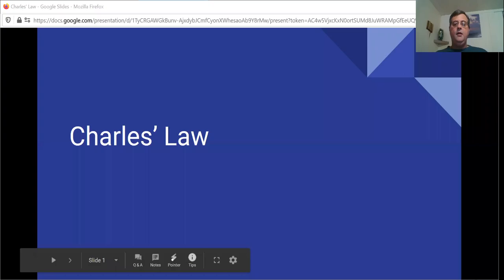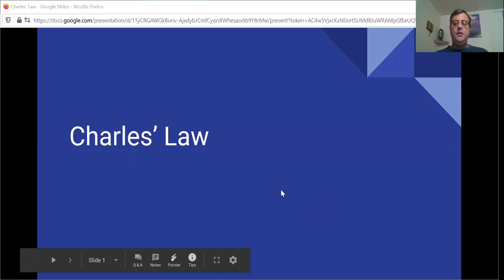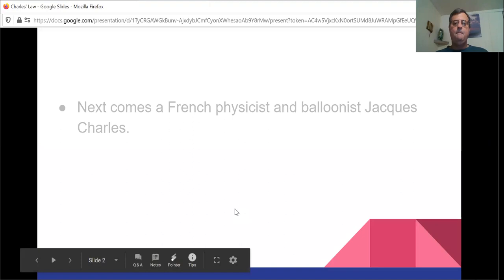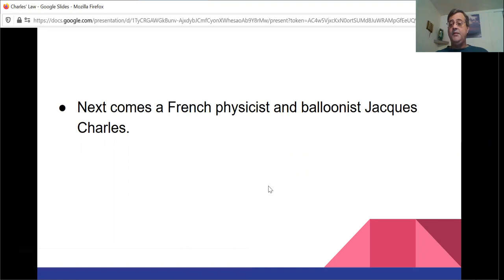Charles Law is a second gas law we're going to look at. It's named after a French balloonist named Jacques Charles. Hence the name Charles Law. He was a physicist as well. Charles Law states that the volume of a fixed mass of gas is directly proportional to its Kelvin temperature if pressure remains constant. Now he's a balloonist who gets up in hot air balloons, so he's interested in volume of the balloon and temperature. That's it. So it makes sense that he investigates this kind of stuff.